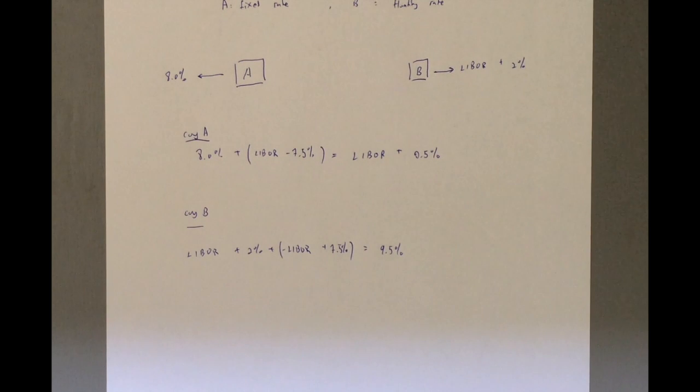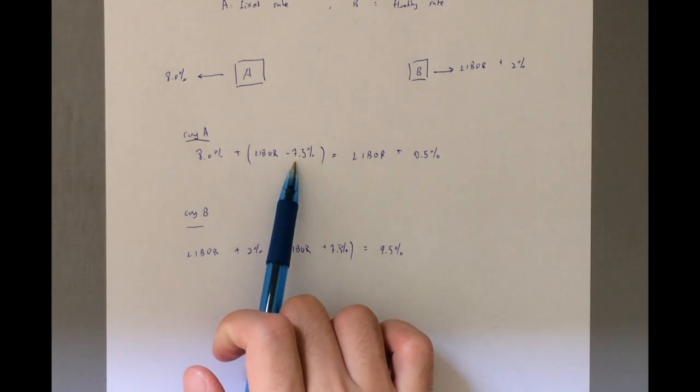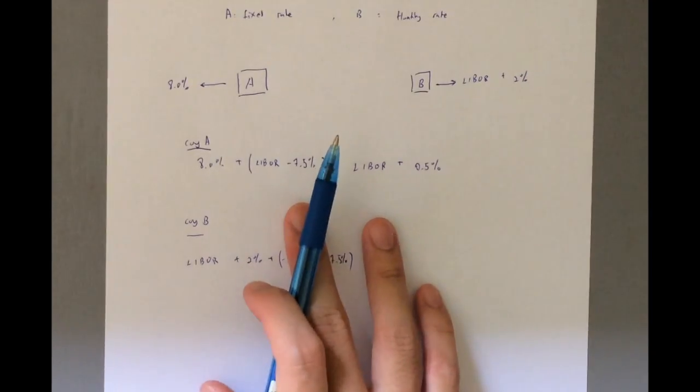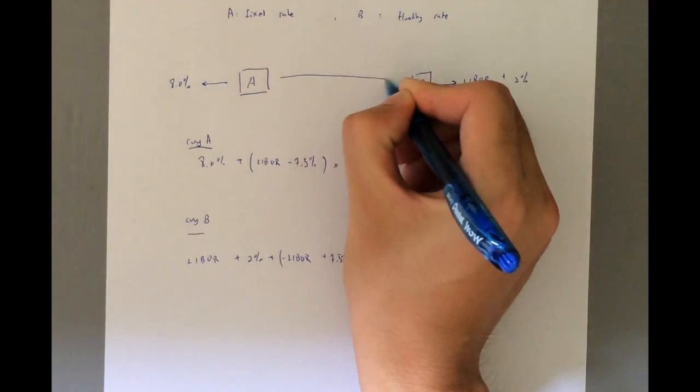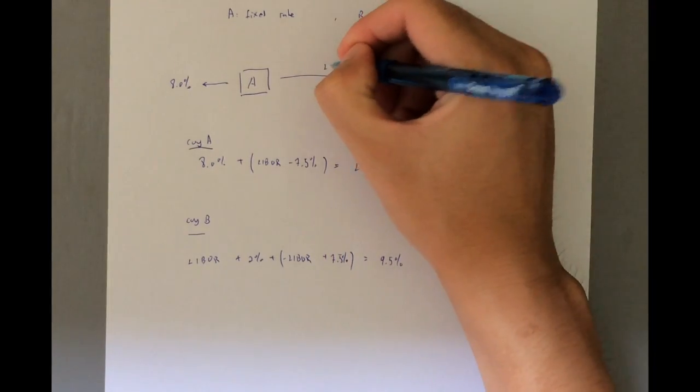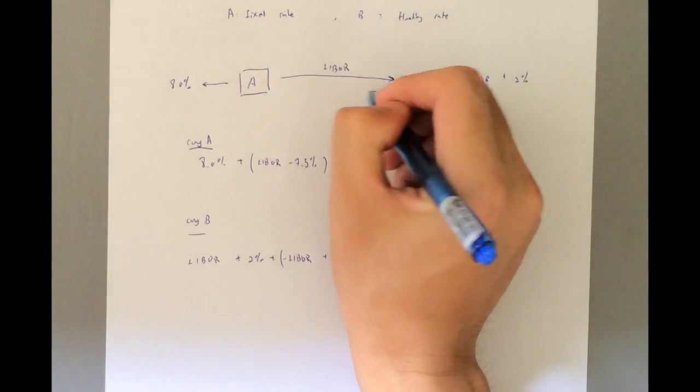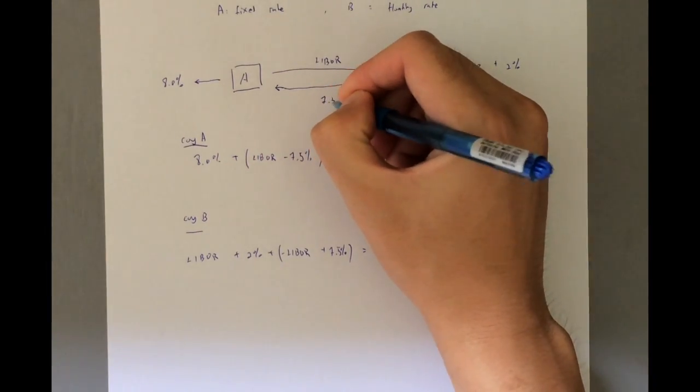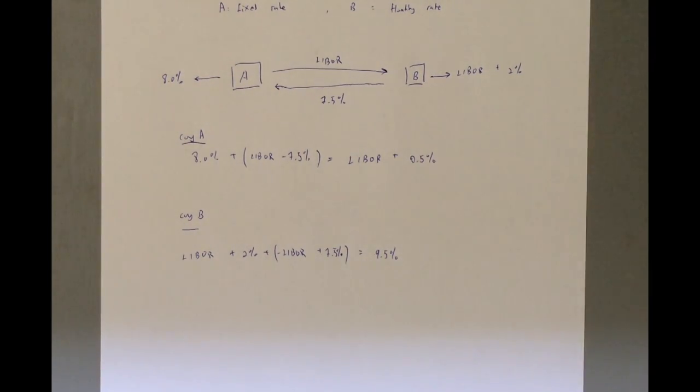Okay, so now we can take a look. Actually, this and this are exactly the opposite of each other. Okay, so now let's take a look at Company A. When it adds LIBOR minus 0.5%, whenever you see an add, because this add here, it is paying money. So A needs to pay B a LIBOR rate.